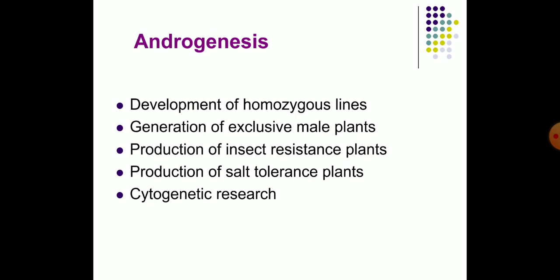It is possible to develop homozygous lines within a span of few months by employing anther or pollen culture. By the process of androgenesis to produce haploids followed by chromosome doubling, it is possible to develop exclusive male plants. Haploids provide a convenient system for the induction of mutations and selection of mutants with desired traits. Insect resistance genes can be introduced while producing haploids.